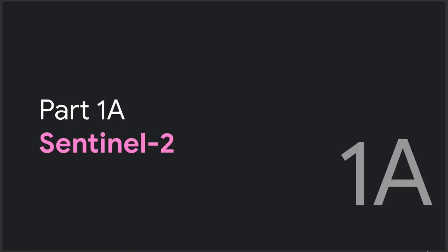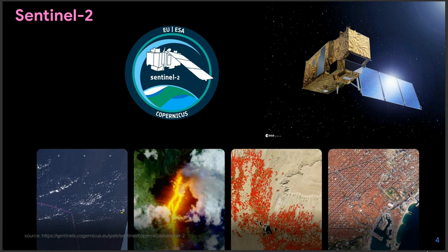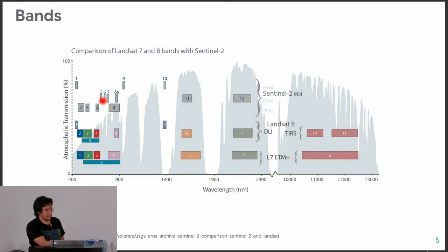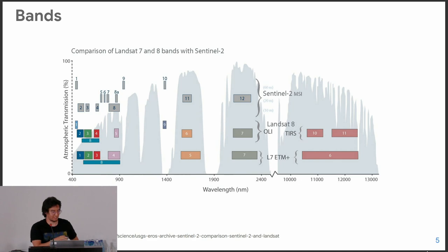Starting with Sentinel-2 — most of us know what it is. We have a collection of two satellites with a multispectral instrument providing very high resolution public satellite imagery across different bands of the electromagnetic spectrum. For example, we have 10-meter bands in RGB and near-infrared, 20-meter bands in the red edge, narrow near-infrared, and short-wave infrared, and 60-meter bands for aerosols, water vapor, and cirrus. It's a very useful dataset.